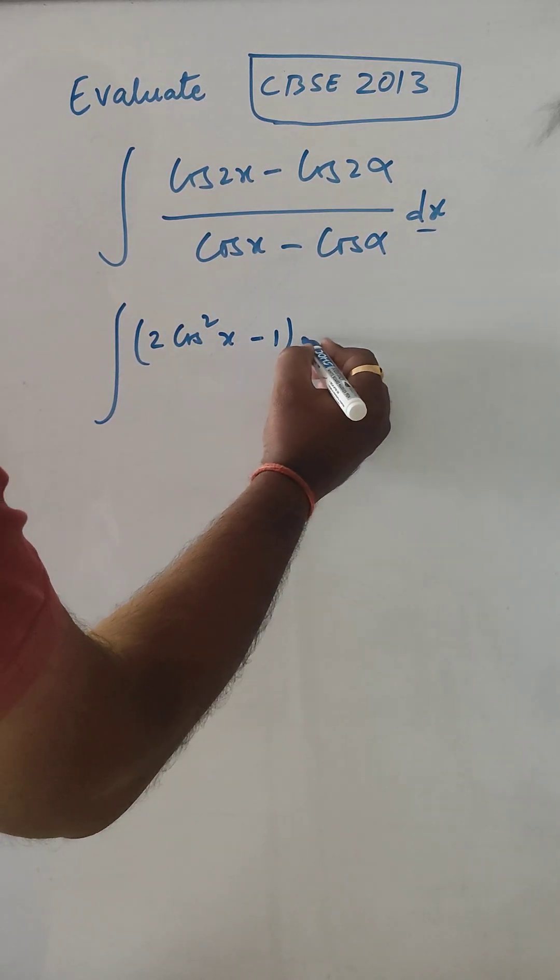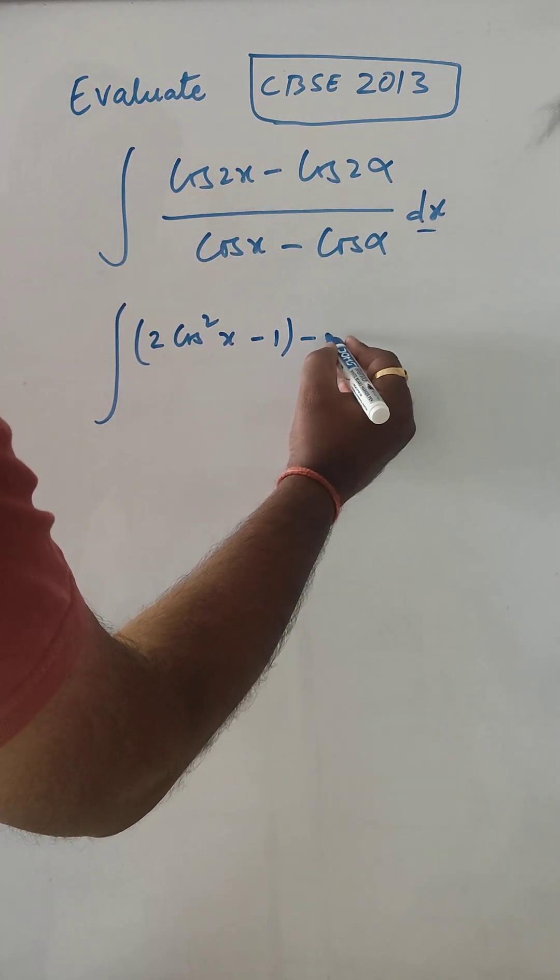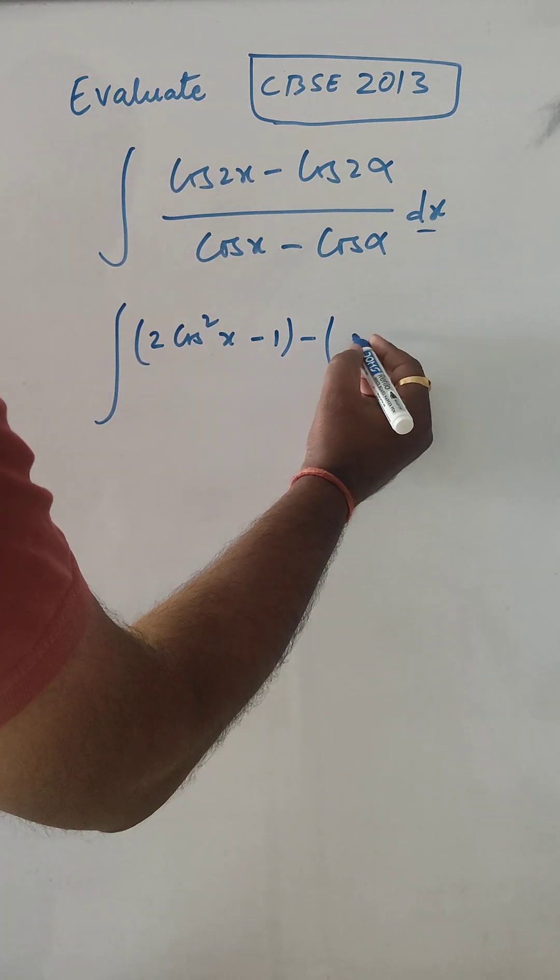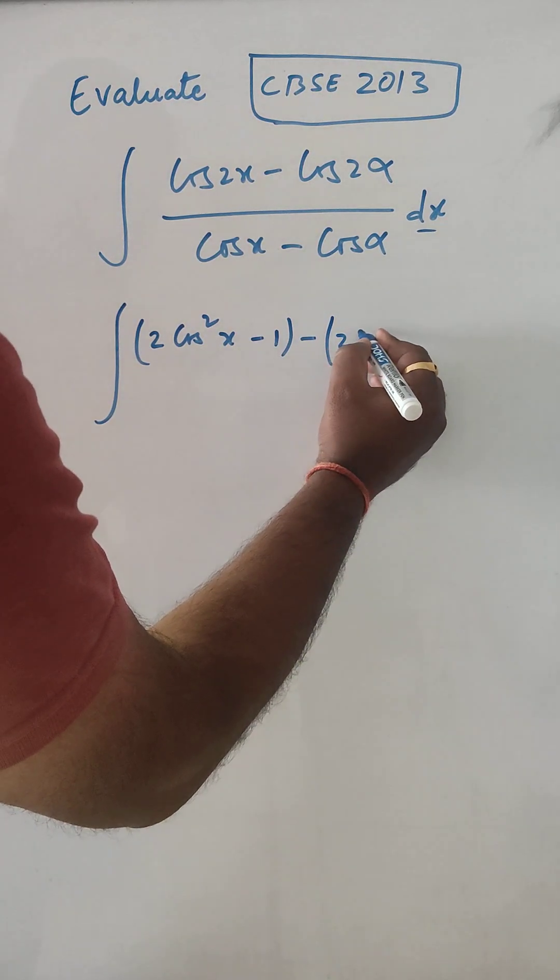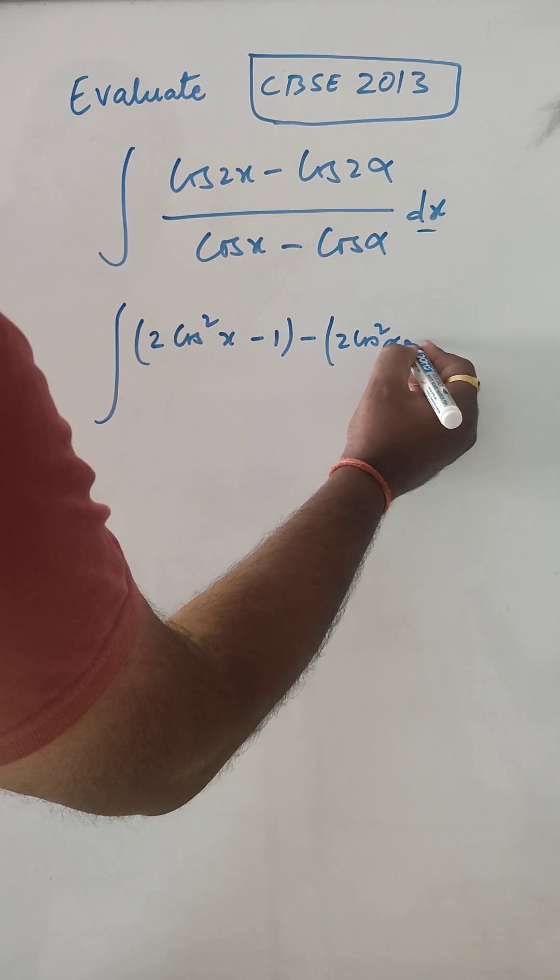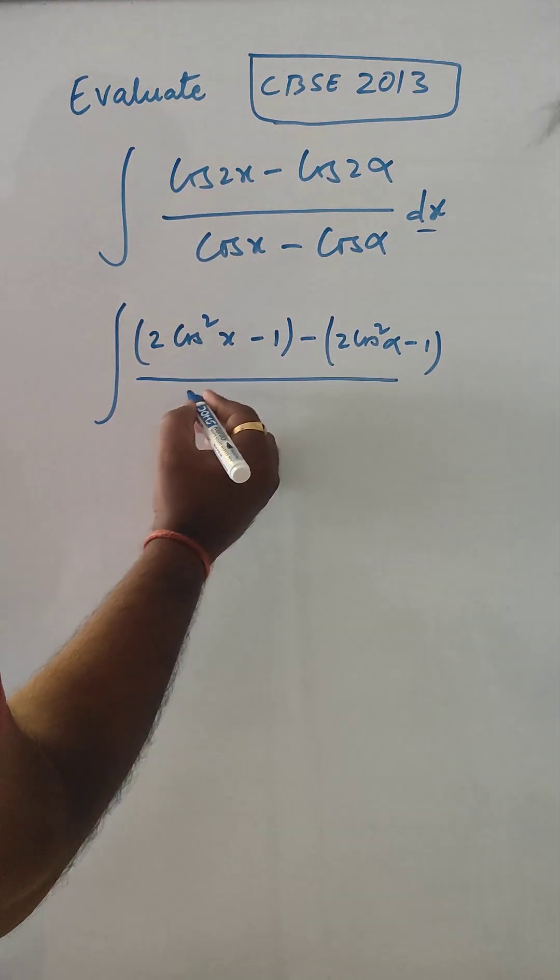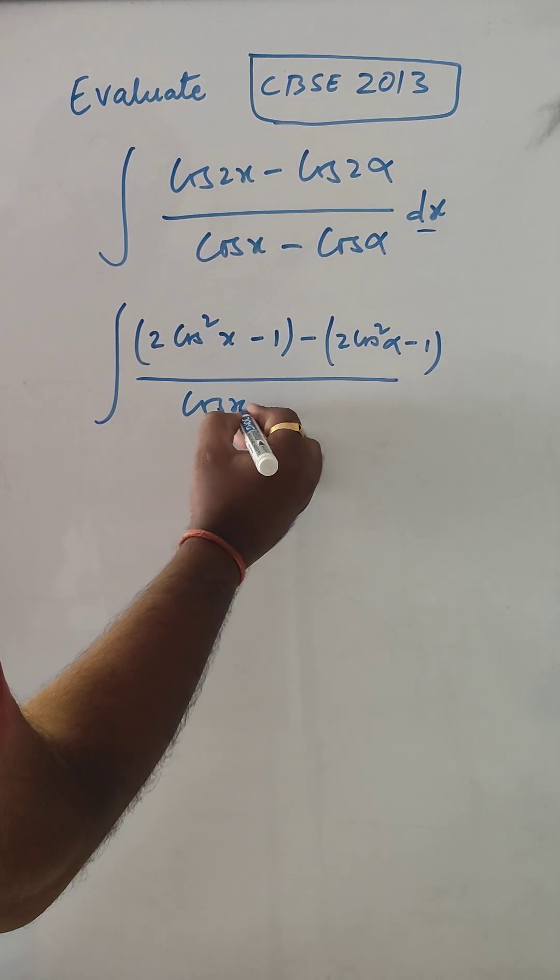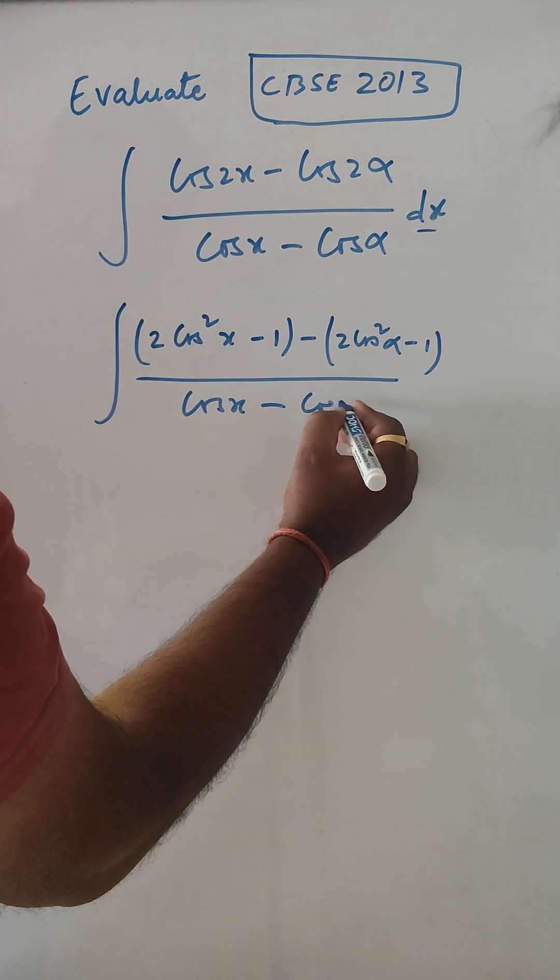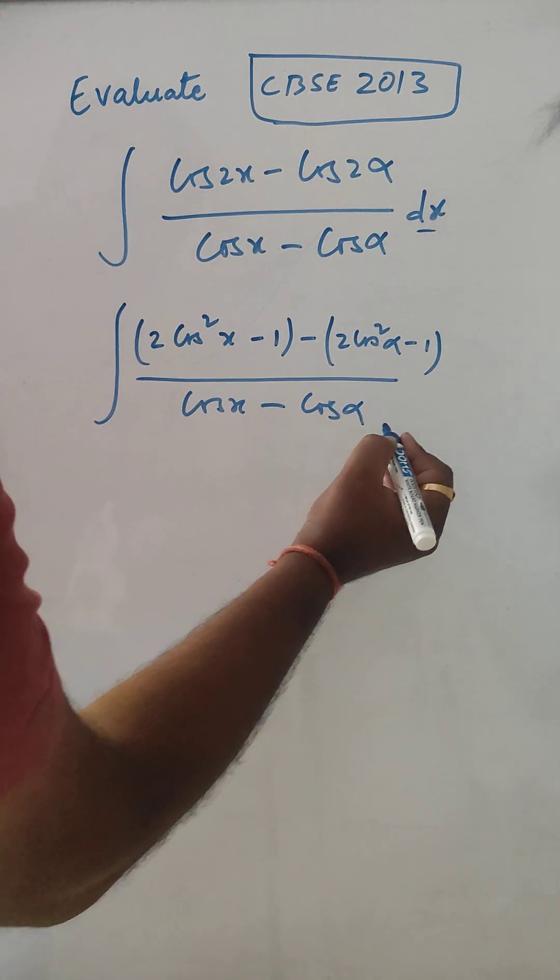And cos 2α can be written as 2 cos²α - 1. This is divided by cos x - cos α, dx.